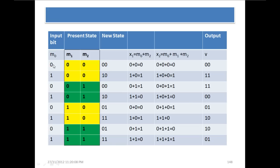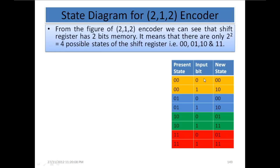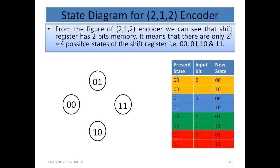It can be difficult to understand the present state, new state, input bit, and output bit all from the tabular form. There is an easier way called the state diagram, which is more pictorial and easier to understand. We define 4 states: 00, 01, 11, and 10, as before.